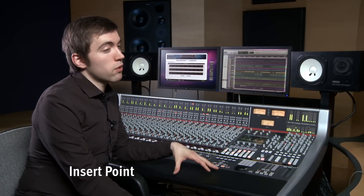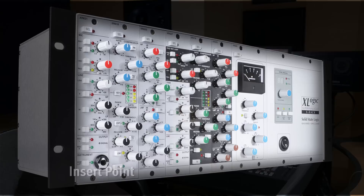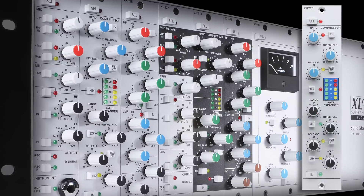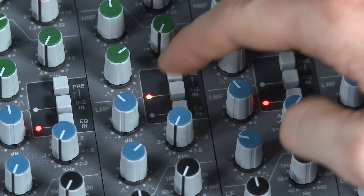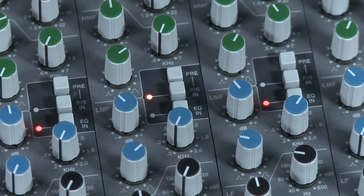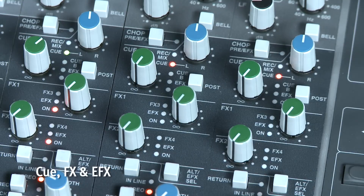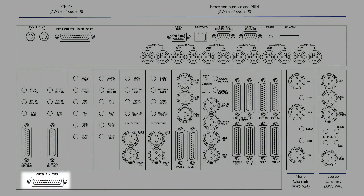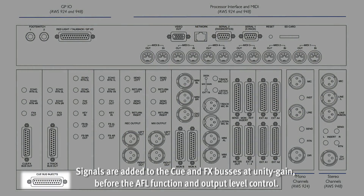Every channel features an insert point which can be either mono or stereo, perfect for your favorite vintage rack mount processors. The new stereo SSL X-Rack dynamics are a perfect fit. You can even move the insert point pre-EQ if you wish. Each channel can feed two stereo cue buses and four mono effects buses. On the console rear is a cue and effects bus inject connector that allows additional signals to access the same cue and effects destinations, so a send from the desk can be combined with a send from a DAW and sent to the same outboard processor.